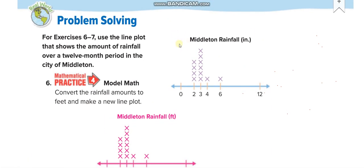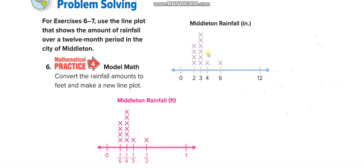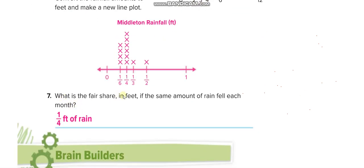Here they give you rainfall in inches and want you to write it in feet. One foot equals twelve inches, and since you're converting from smaller to larger you divide by twelve. Dividing each value: six over twelve simplifies to one-half; two over twelve simplifies to one-sixth; three over twelve simplifies to one-quarter; four over twelve simplifies to one-third. Then plot the data the same way, and for fair share, add all the fractions, write the total number of crosses as the denominator, and simplify.